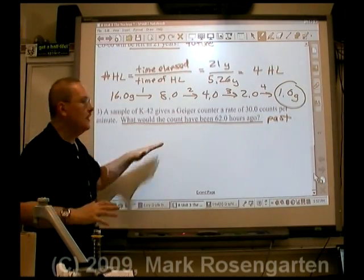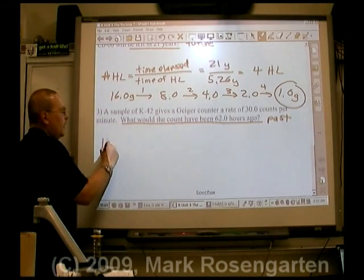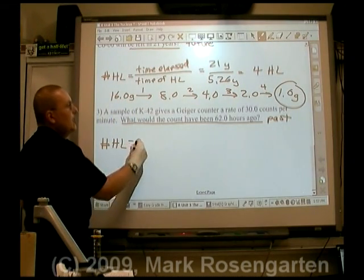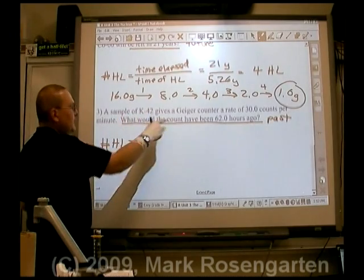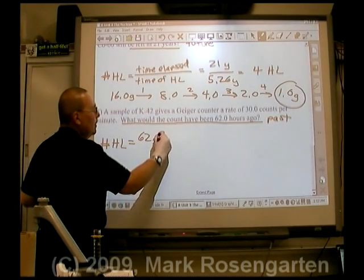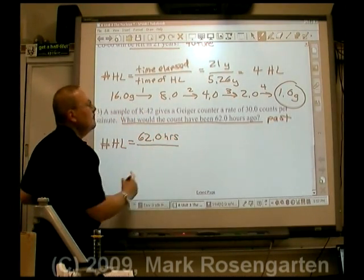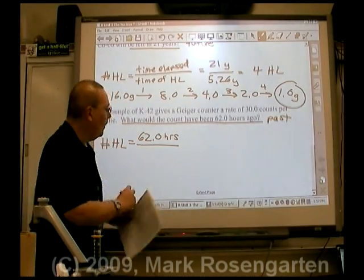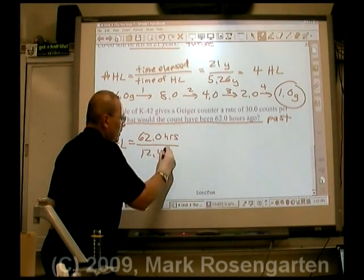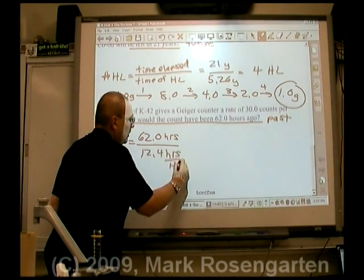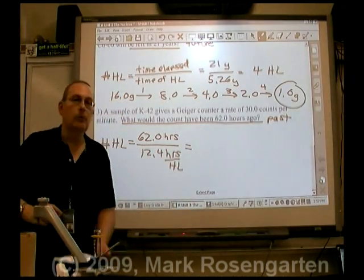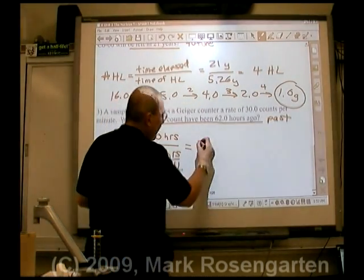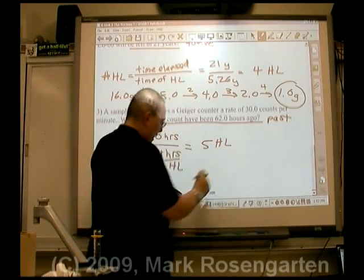In this problem we start exactly the same way — find how many half-lives have gone by. Time elapsed is 62.0 hours, divided by the half-life length. We're dealing with potassium-42, which has a half-life of 12.4 hours. 62.0 divided by 12.4 gives us exactly five half-lives.